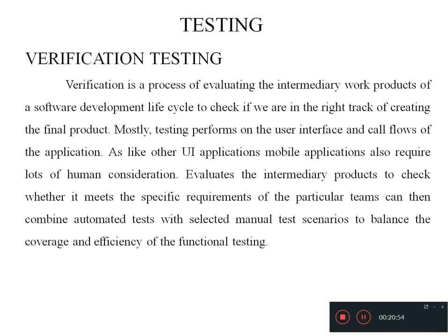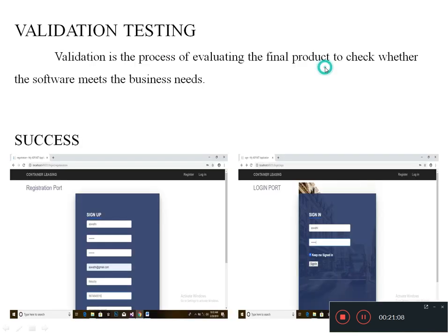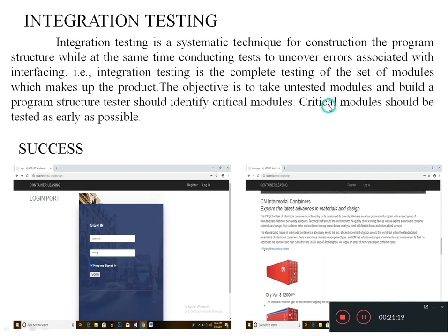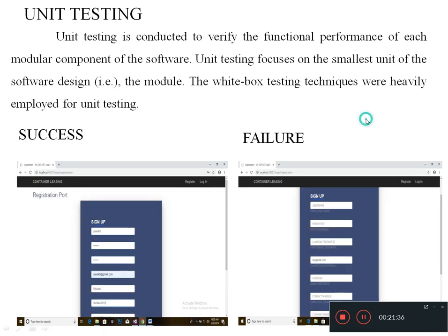Testing. Verification testing is the process of evaluating the intermediary work products of the software development life cycle to check if we are on the right track of creating the final product. Validation testing is the process of evaluating the final product to check whether the software meets business needs. Integration testing is a systematic technique for constructing the program structure while conducting tests to uncover errors associated with the interfacing. Unit testing is conducted to verify the functional performance of each modular component of the software.